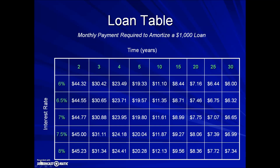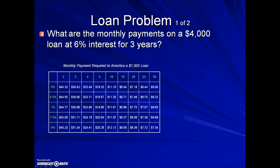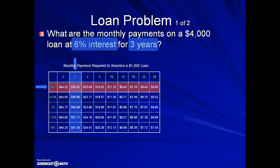Let's take a look at an example and see how that's going to work. In this first problem, they're asking for the monthly payment on a $4,000 loan at 6% interest for three years. The most important thing in computing the monthly payment is to find the intersection of the term in years — which is three years — so we move across the top to find the column for three years. Then we move down the interest rate column to the row for 6%, and where those two intersect gives us the monthly payment to pay off $1,000.